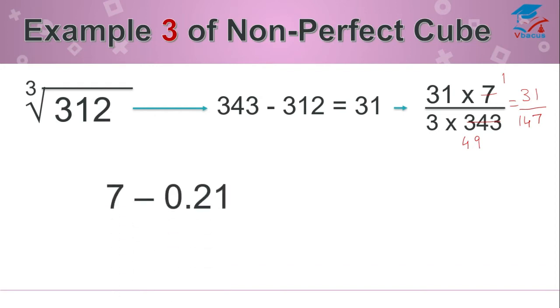Here we have picked up the bigger cube number, so you have to subtract. So you have to subtract 0.21 from 7. You will get the answer 6.79.